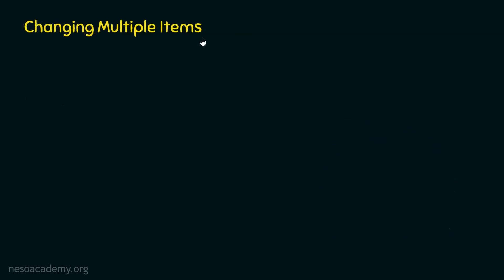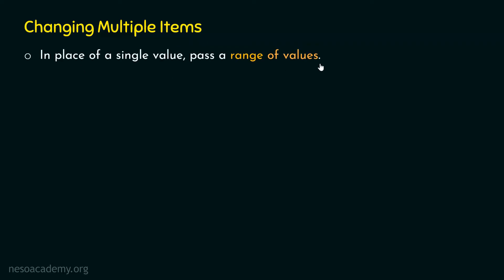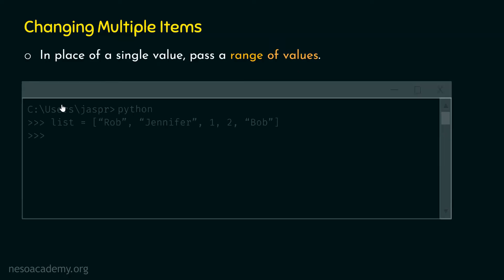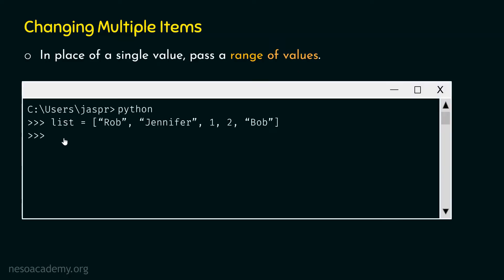It is possible to change multiple items by using the slicing operator. We need to pass a range of values in this case, so instead of passing a single index, we can pass a range of indices. For example, let's open our command prompt again and consider the same example list with five items. This time, the requirement is to replace two items with three different items.